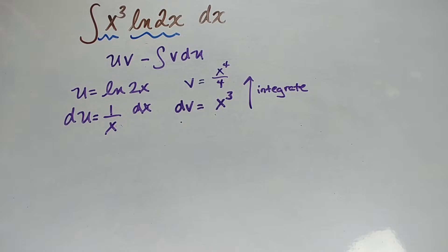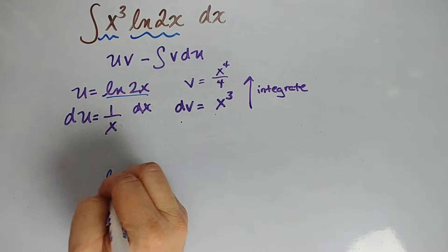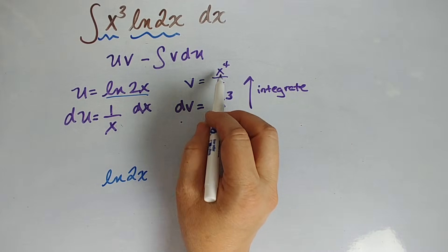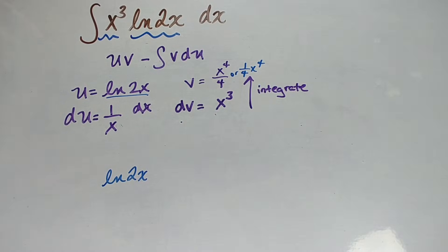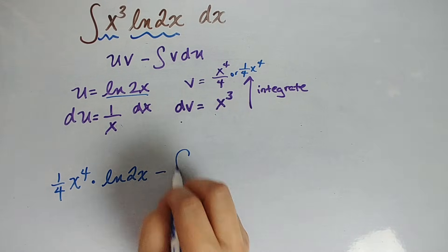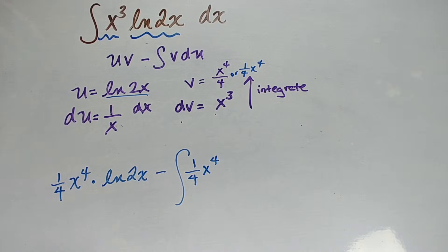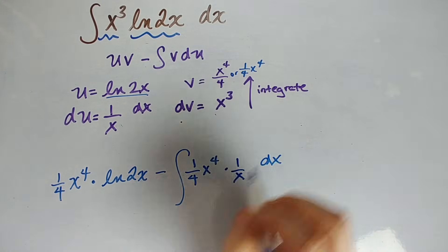So far so good. All right, so now we can just plug it all in. So let's do that. So we've got uv. Well, u is the natural log of 2x. So natural log of 2x times v, which is x to the 4th over 4 or 1/4 x to the 4th. 1/4 x to the 4th times the natural log of 2x minus the integral of vdu. So v, again, is 1/4 x to the 4th. du, remember, du is the thing that became easier. So 1 over x dx.